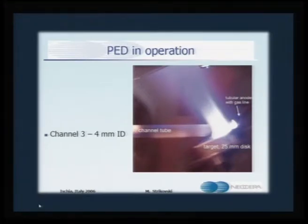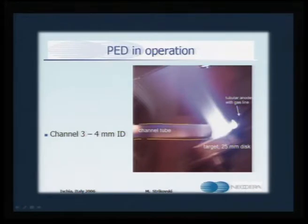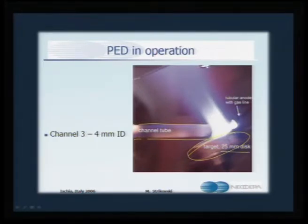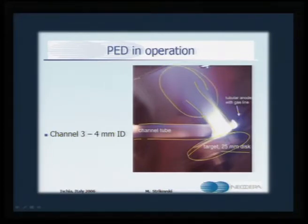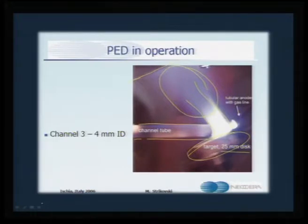When PED is in operation, you see a channel tube illuminating during the process — this is the ceramic tube guiding the electron beam onto the target, a typical 25 mm disc target. When the electron beam strikes, a plasma plume emerges. The control of this plume, its composition, and the target mounted perpendicular to the plume all govern the dynamics of the PED process, determining whether the film quality will be beneficial or detrimental.